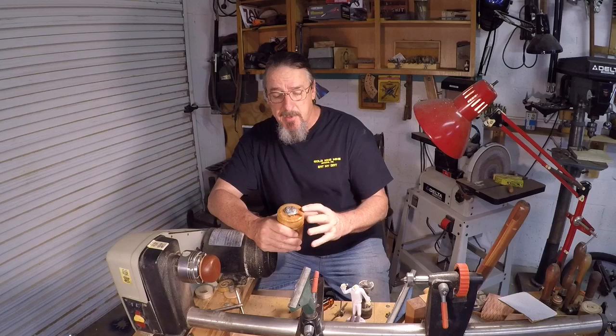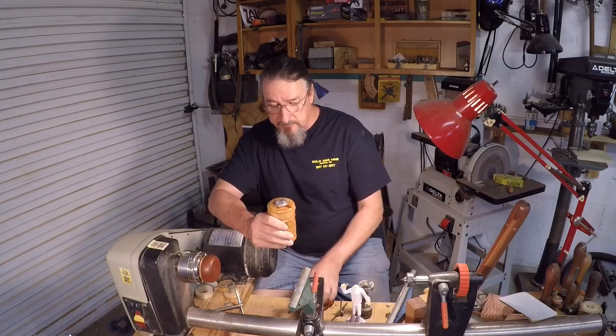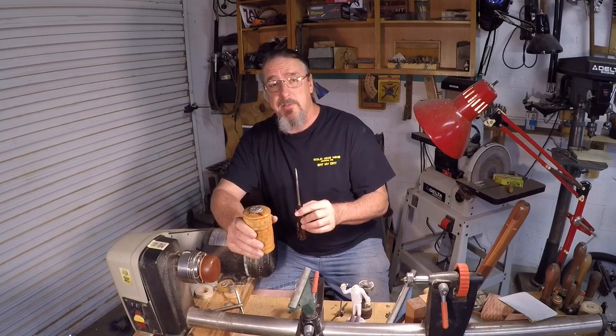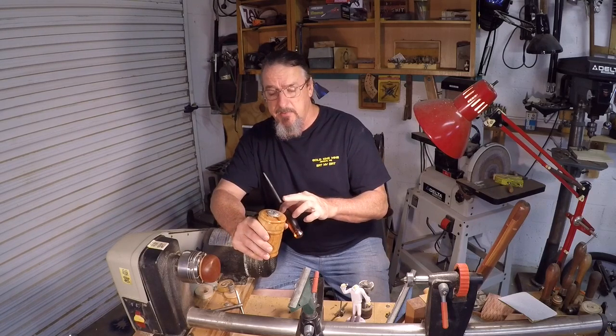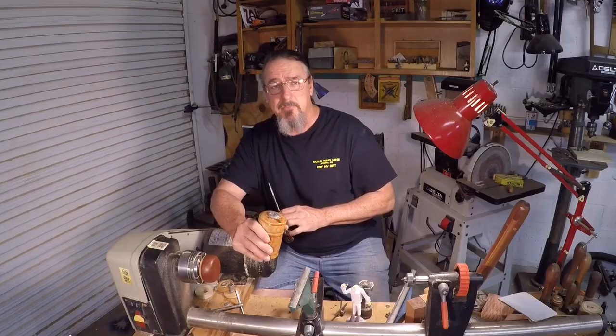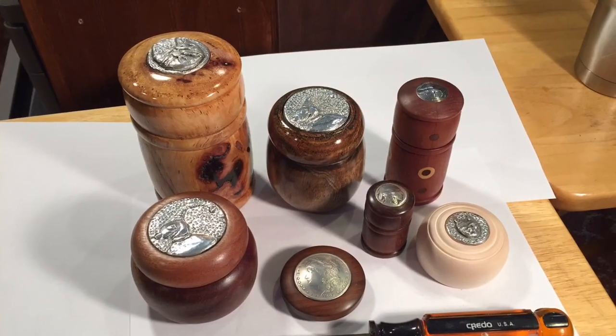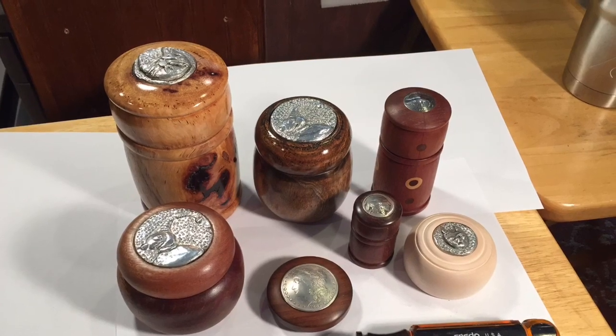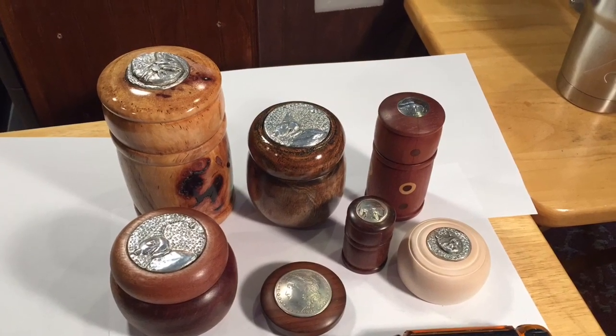I'm going to talk a little bit about how I do this and I'm going to share a tool that I made out of an old screwdriver that helps me get a real good fit between the medallions and the tops of my lidded boxes. I spent some time learning how to cast pewter medallions and also dome coins to make elements for my lidded boxes.